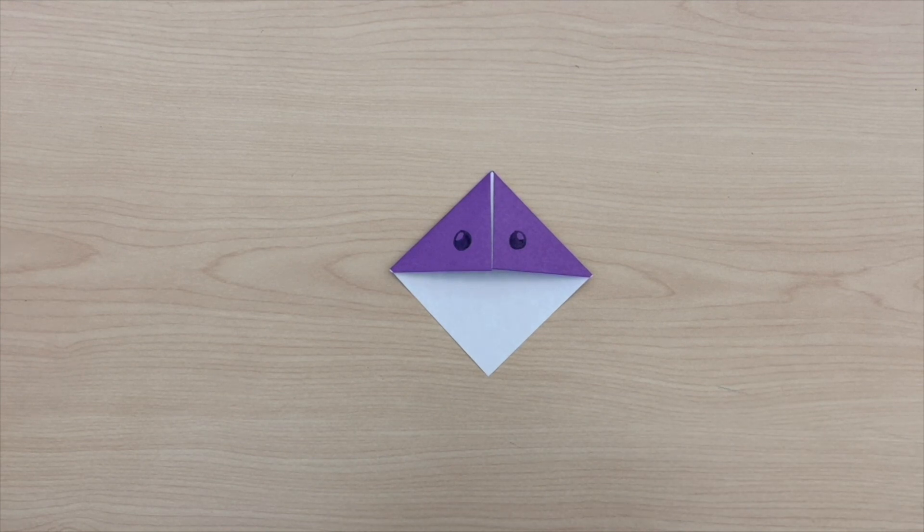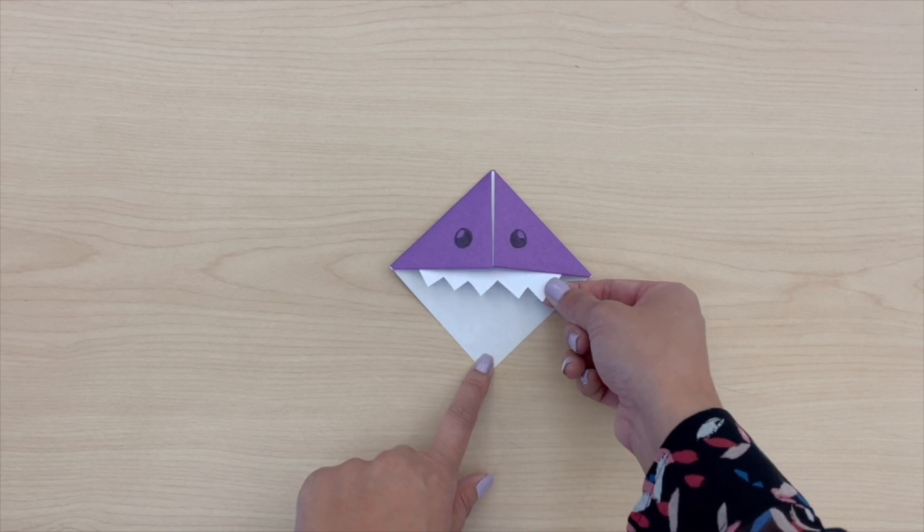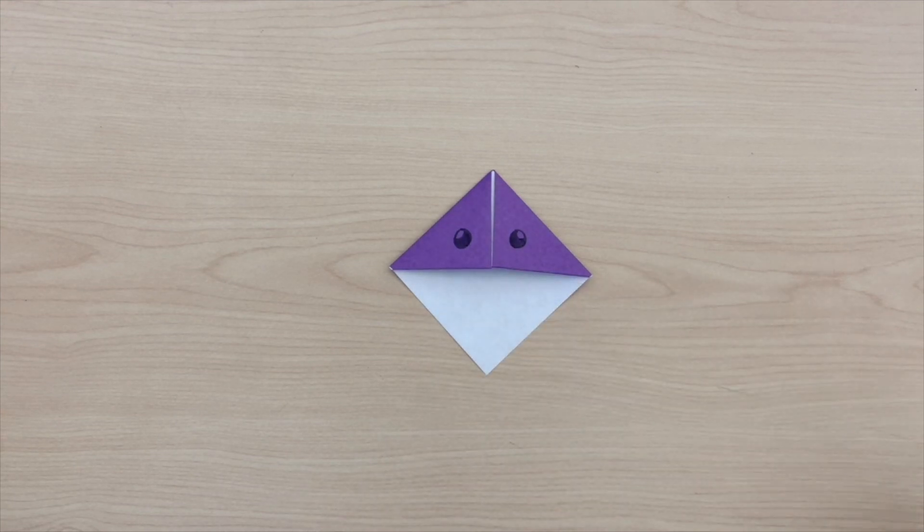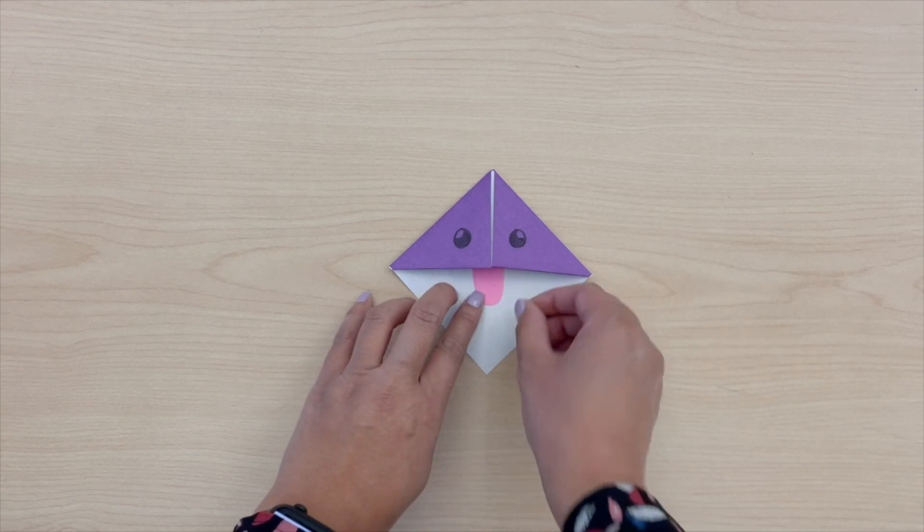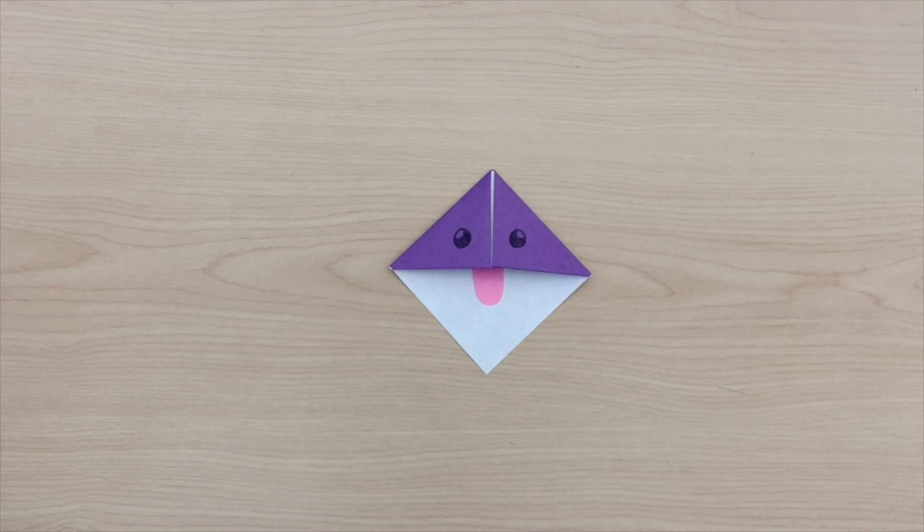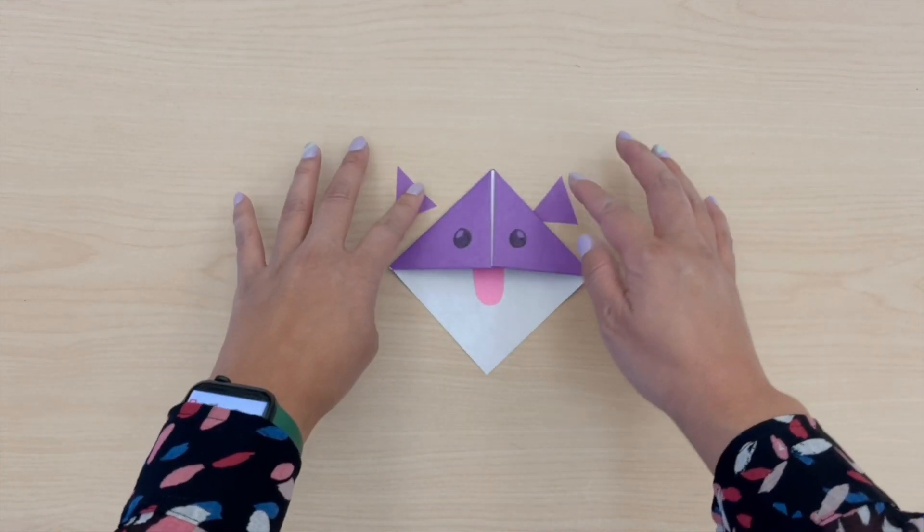For the mouth, you can cut out teeth and attach it under the pocket. Another idea is to cut out a tongue and attach it below. Lastly, you can cut out some triangles and use it as ears.